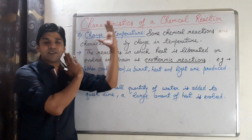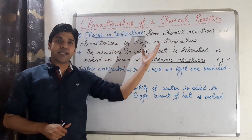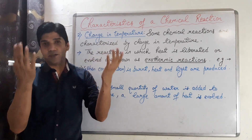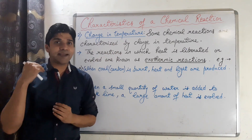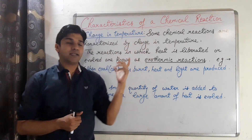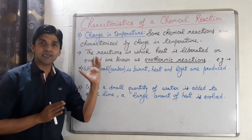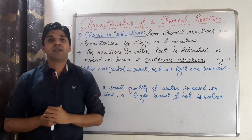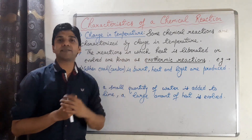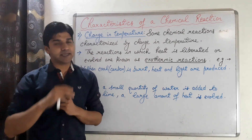The second characteristic feature of a chemical reaction is change in temperature. Some chemical reactions are characterized by change in temperature — heat is either absorbed or evolved. Depending on this, we have two types of reactions: reactions in which heat is evolved or liberated are called exothermic reactions, and reactions in which heat is absorbed are called endothermic reactions.